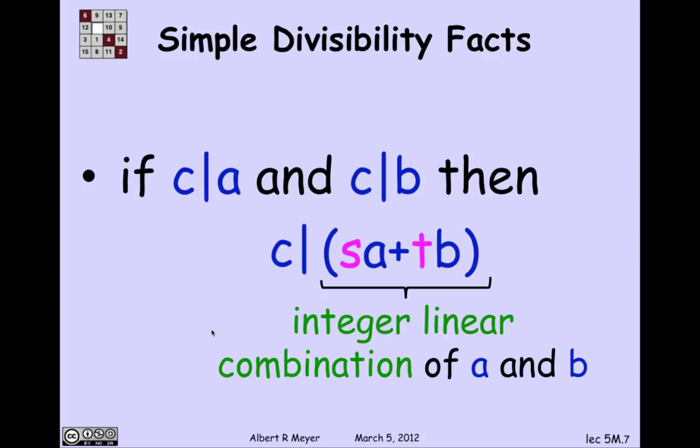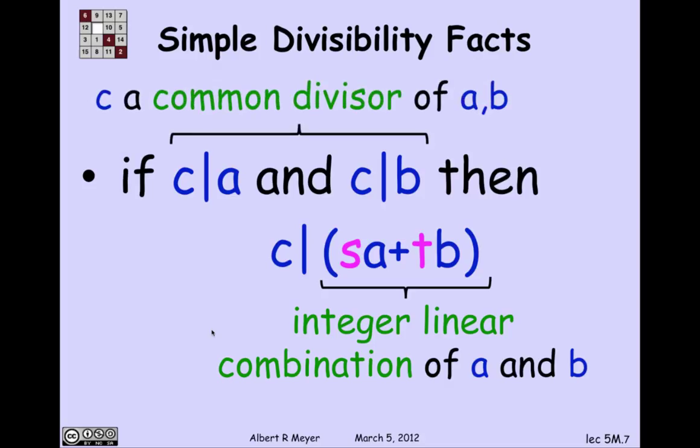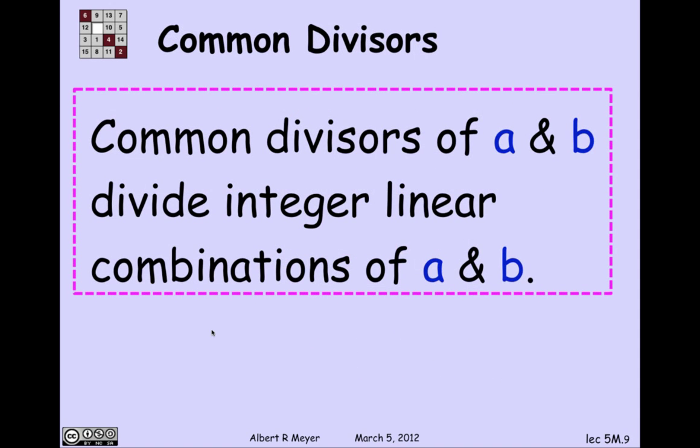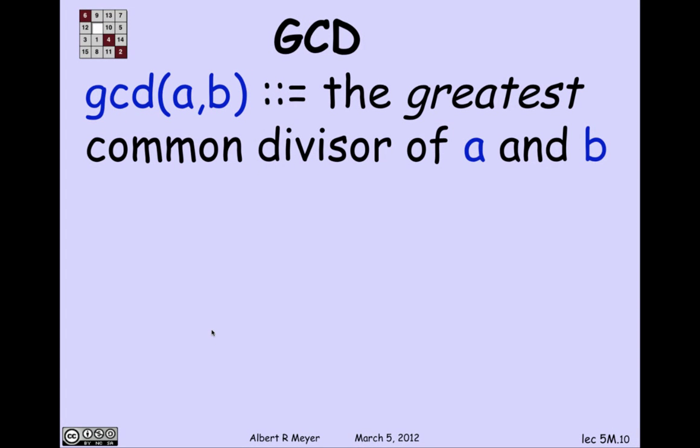So we've just figured out that if C divides A and C divides B, then C divides an integer linear combination of B. When C divides two numbers, it's called a common divisor of those two numbers. So we could rephrase this observation by saying common divisors of A and B divide integer linear combinations of A and B. Which is a good fact to just file away in your head.